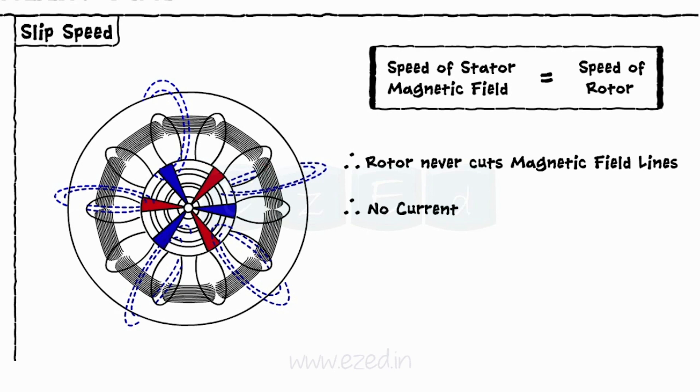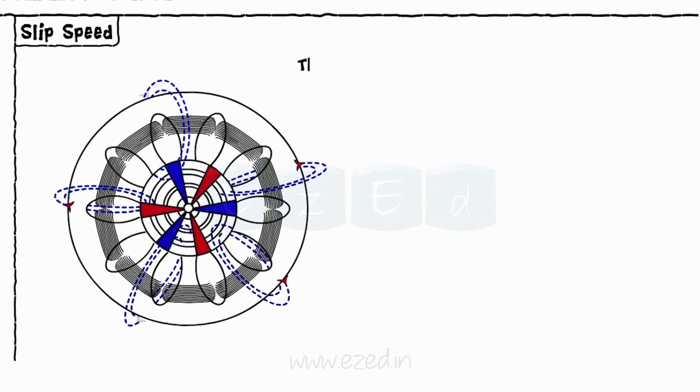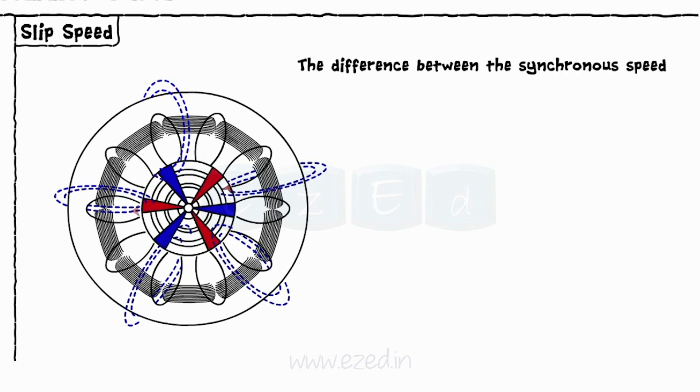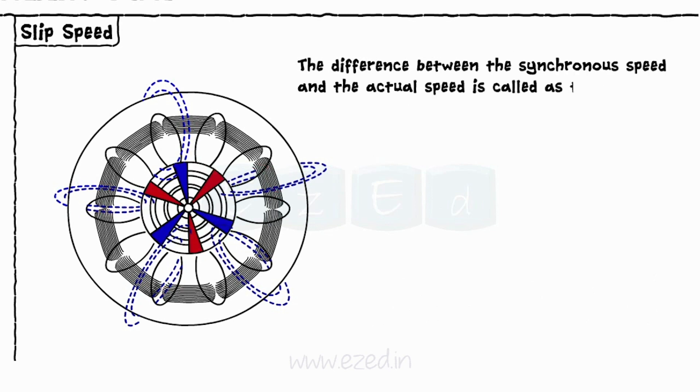Hence, the rotor and the magnetic field of the stator never rotate with the same speed. The difference between the synchronous speed and the actual speed is called the slip speed.